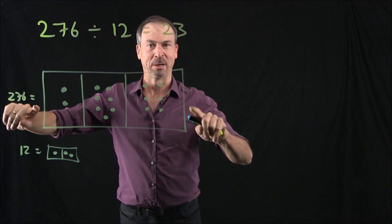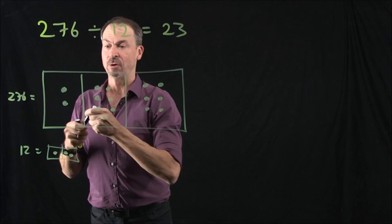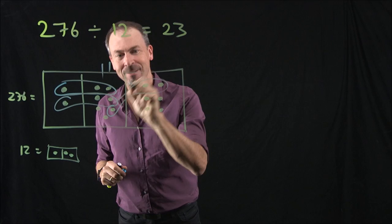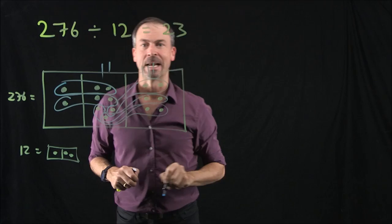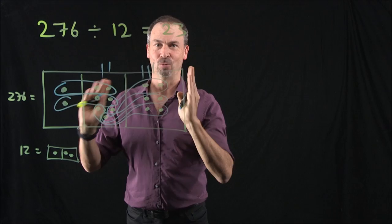We drew a picture of 276, drew a picture of 12. We look for groups of 12 in a picture of 276. One dot next to two dots, one at that level. One dot next to two dots, one at that level. One dot next to two dots, one at that level. Another one at that same level, another one at that level yet again. So two at the 10's level, three at the 1's level, 23 groups of 12. Grand.